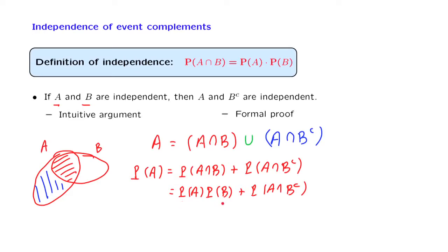Now let us move this term to the other side. And we obtain that the probability of A intersection with B complement is the probability of A minus the probability of A times the probability of B.